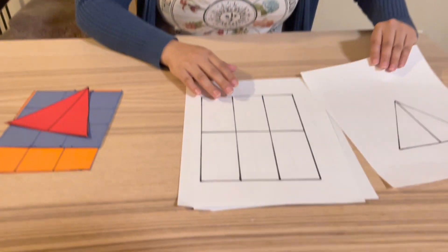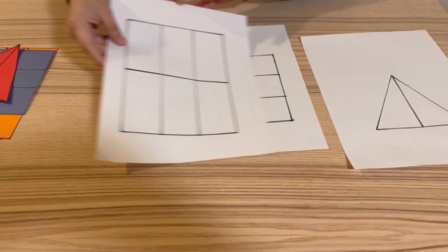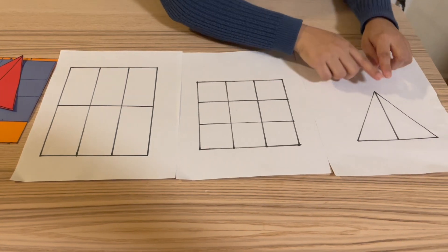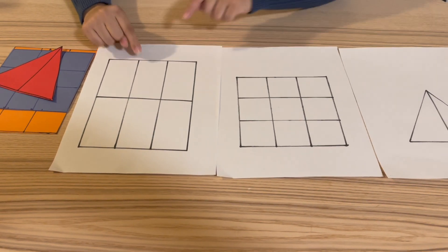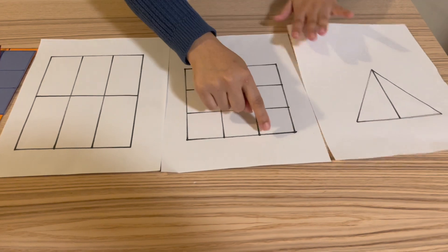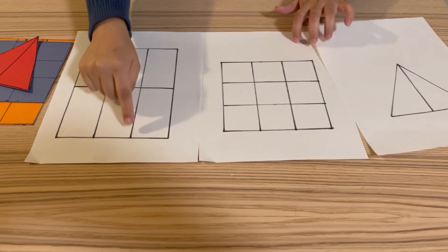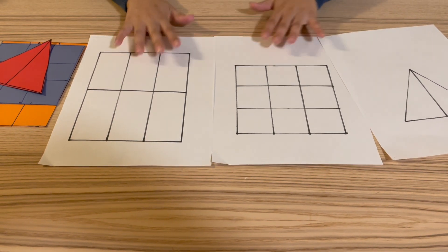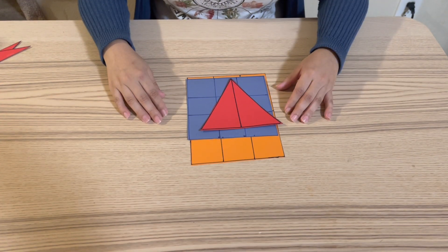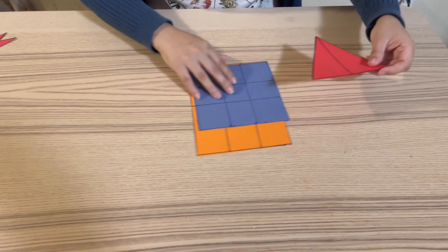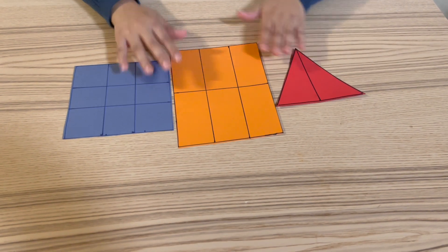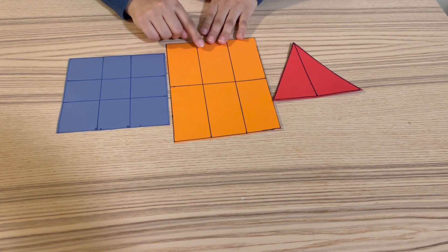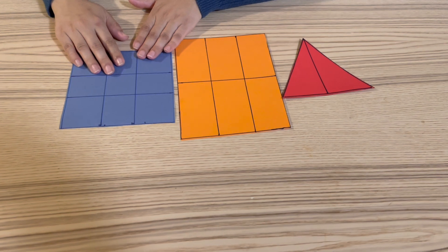The materials we'll be using are three shape grids: a triangle, a square, and a rectangle, divided into smaller shapes. We also will be using three colored shapes: red, orange, and blue.